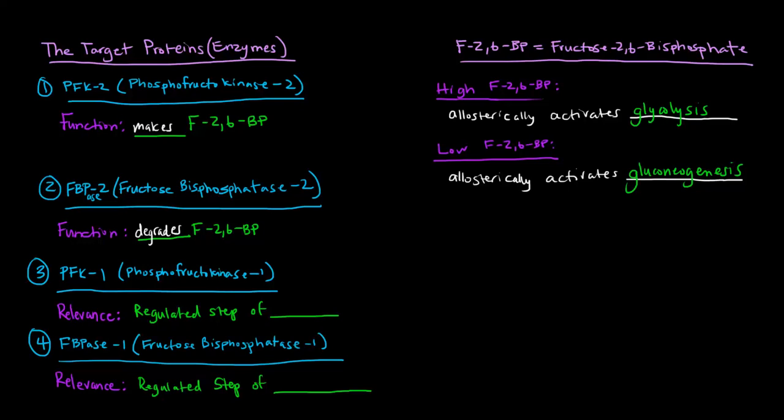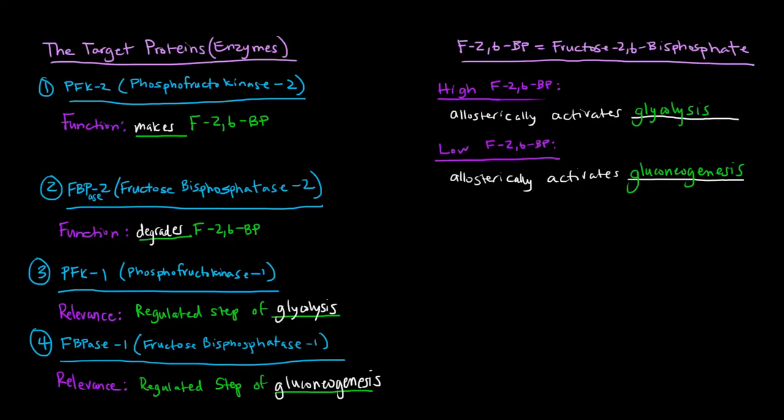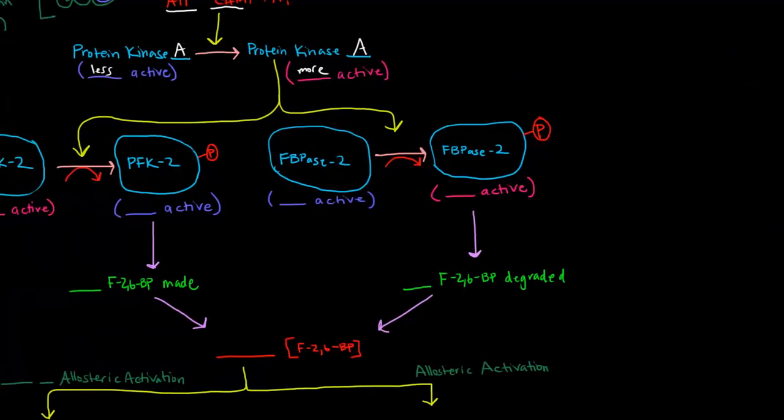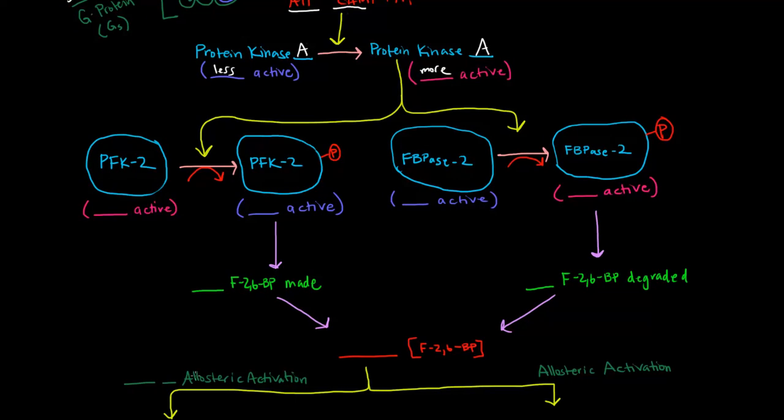Now the other two enzymes here that are important are PFK-1, which is phosphofructokinase-1, and the relevance here is that it's a regulated step of glycolysis. And here, fructose bisphosphatase-1 is a regulated step of gluconeogenesis. So that sort of review was pretty rapid and quick, but I don't want to spend too much time on this because this is stuff that we have already gone over and I hope that you already know for this.